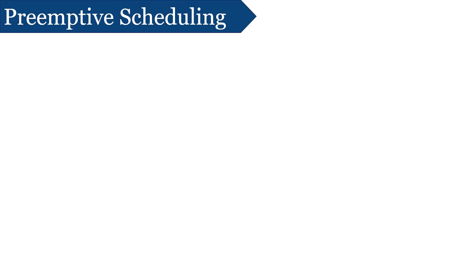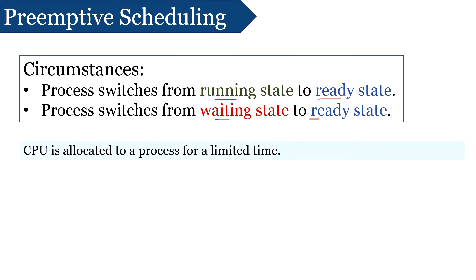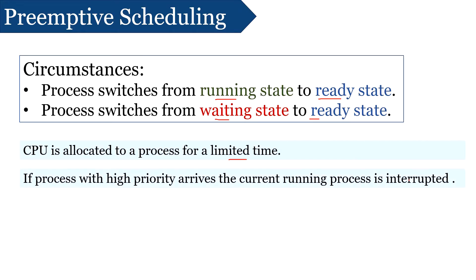Primitive scheduling occurs under two circumstances: when a process switches from a running state to a ready state, or when a process switches from a waiting state to a ready state. In primitive scheduling, the process in the ready queue is allotted CPU for a limited time period. If it terminates in that time period, that's fine; otherwise, if its burst time is still remaining, it is placed back in the ready queue until it gets the next chance for execution.